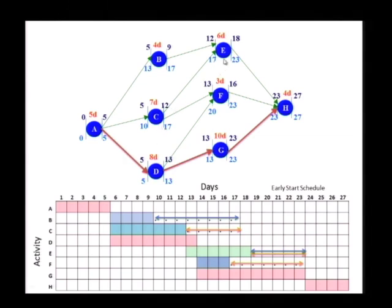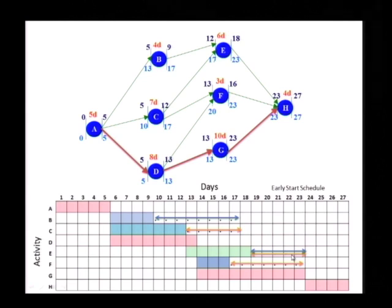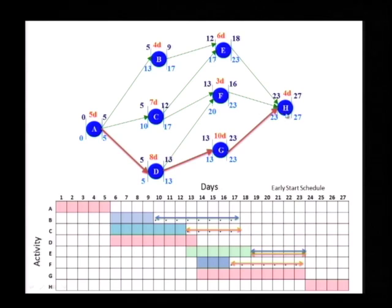D does not have float. Now we go to E. Here is E. When I am moving E for total float and free float, I can move E all the way — five days, that is my total float. Free float is also the same, because it does not affect anything. It is converging to a critical activity and I can move it all the way to 23 without affecting H.